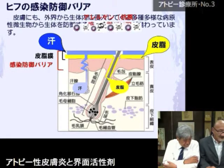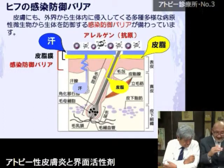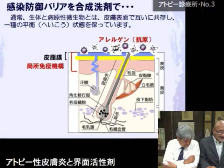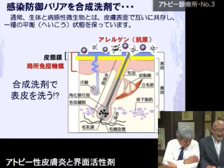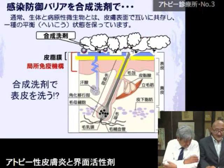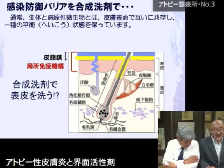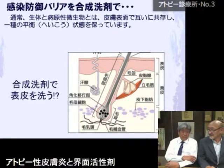分泌型IgAが主役になって、有害な細菌やウイルス、カビ、さらに様々な抗原を中和し、同時に細菌が過剰に皮膚の表面で増えないような動きをしているのが感染防御バリアです。皮膚の感染防御バリアは、汗と皮脂が皮脂膜として機能しています。合成洗剤で脂肪を洗うと、アレルゲンは一度は取れますが、一緒に感染防御バリアまで剥ぎ取ってしまいます。